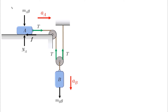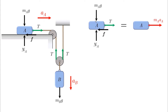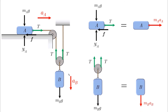Starting with block A: we have the weight, the normal force, and friction because the surface is not smooth, plus the tension pulling to the right. With the acceleration, we can construct the free body diagram and kinetic diagram. For block B, we have two tensions trying to prevent the block from falling down, the weight, and the direction of acceleration, which gives us the free body and kinetic diagrams.